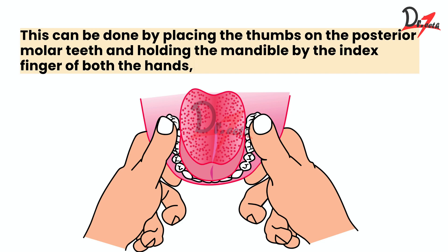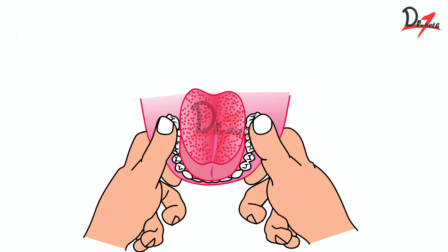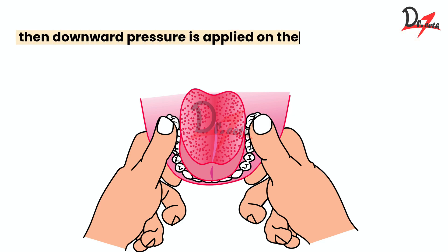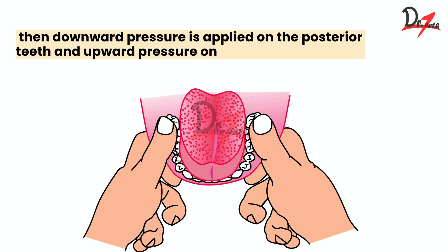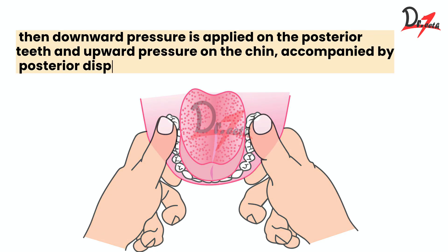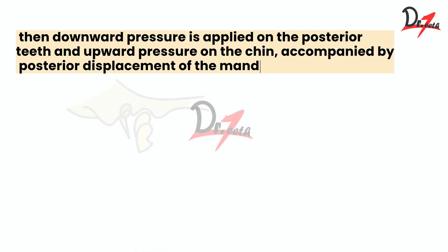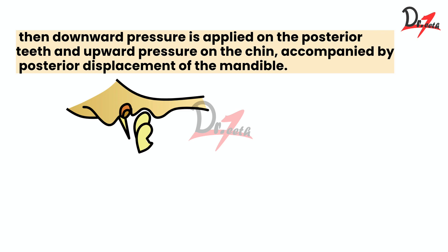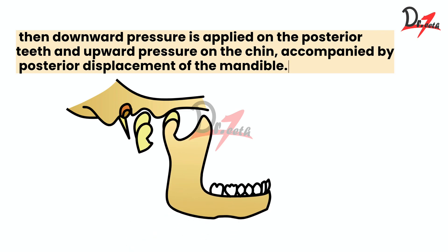As you can see in this animation here, a downward pressure is applied on the posterior teeth and upward pressure on the chin, accompanied by posterior displacement of the mandible.